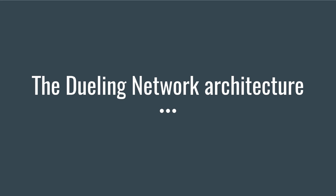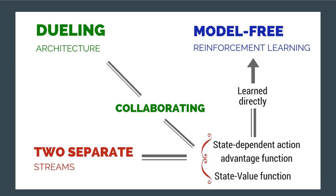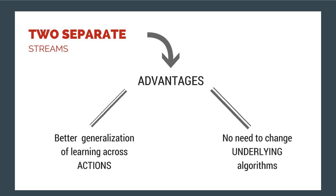Let's dive in further to see what the dueling architecture is all about. We can gain a decisive advantage with this architecture: in some states it matters which action has to be taken, but in most states the choice of action has no effect on what happens. The advantage of this dual network is that there is better generalization across actions.